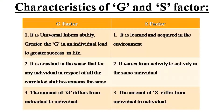Coming to the characteristics of G and S-factor: G-factor 1, it is universal inborn ability. The greater the G in an individual leads to greater success in life. S-factor 1, it is learned and acquired in the environment. G-factor 2, it is constant in the sense that for any individual, in respect of all the correlated abilities, it remains the same. S-factor 2, it varies from activity to activity in the same individual. G-factor 3, the amount of G differs from individual to individual. In S-factor, the amount of S also differs from individual to individual.